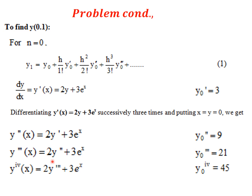For the third derivative: y''' = 2y'' + 3eˣ. Substituting y₀'' = 9: y₀''' = 2(9) + 3(1) = 21. For the fourth derivative: y'''' = 2y''' + 3eˣ. Substituting y₀''' = 21: y₀'''' = 2(21) + 3 = 45.